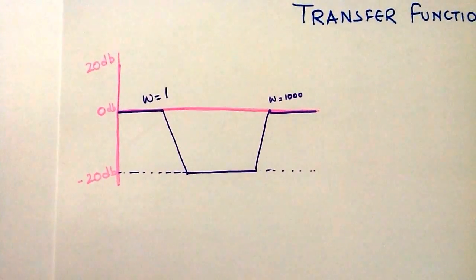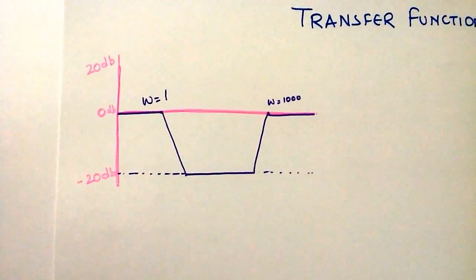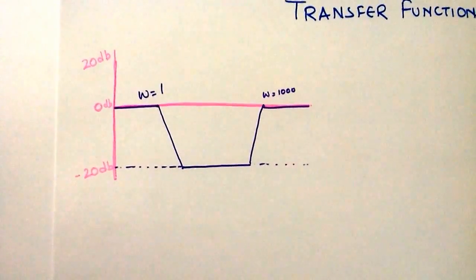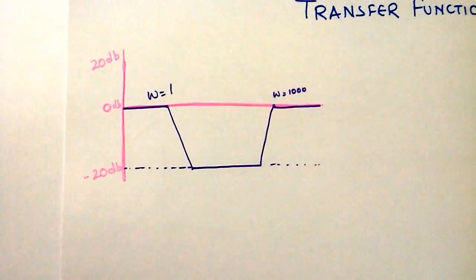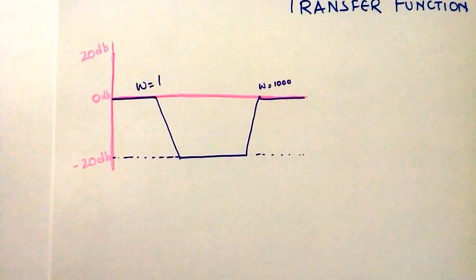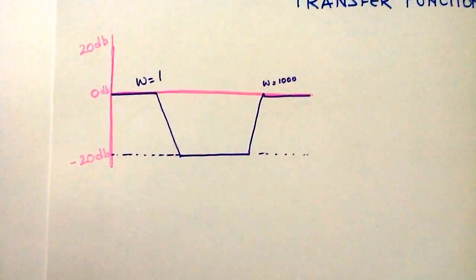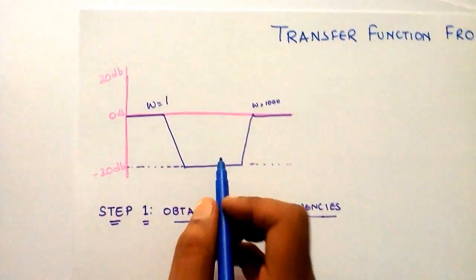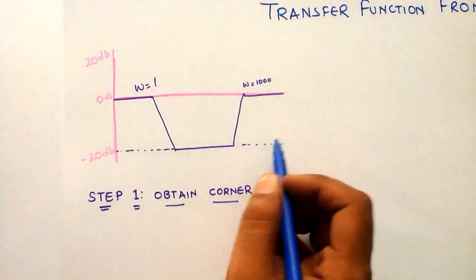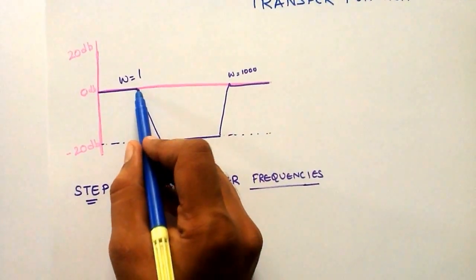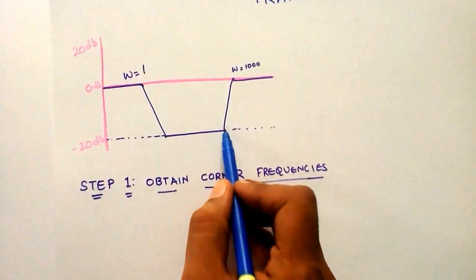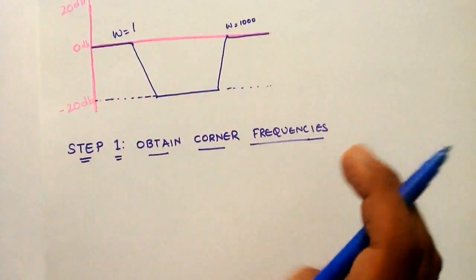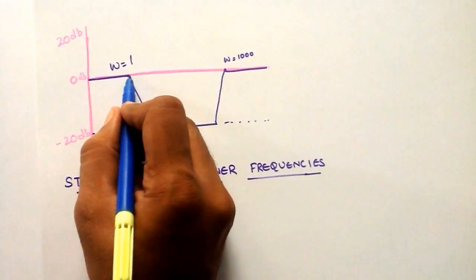Deriving the transfer function from a given Bode plot involves basically just two or three steps. The first step is to derive the corner frequencies. As you can see, you can easily identify from this Bode plot that we have 1, 2, 3, and 4 corners, so we will be having four corner frequencies.